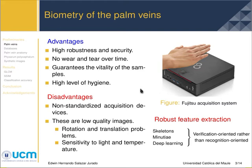The disadvantages are that acquisition devices are not standardized and that the images have low resolution. This is due to rotation and translation problems caused by the non-contact device and influenced by lighting and temperature of the environment. Research has mainly focused on robust feature extraction using different methods such as skeleton-based, minutia-based, and deep learning. The latter has given good results in different computer vision areas but is highly dependent on the amount of data.